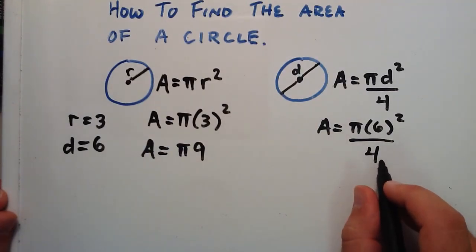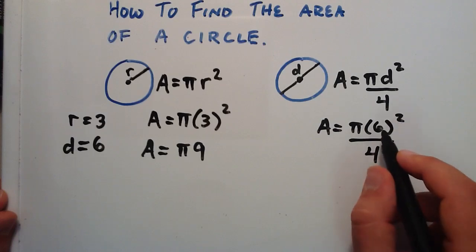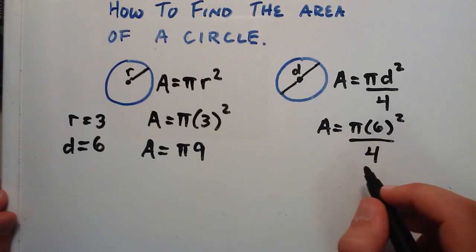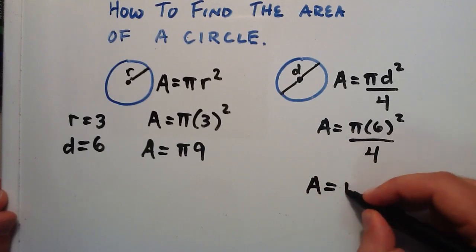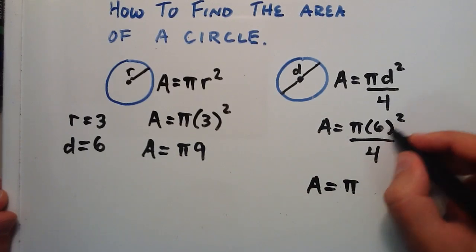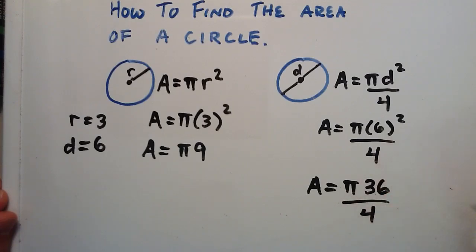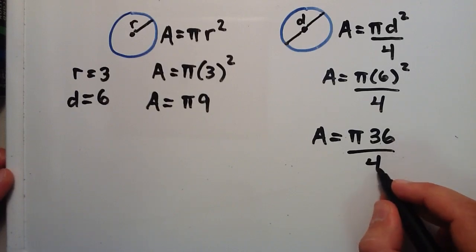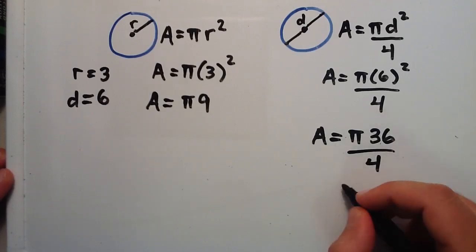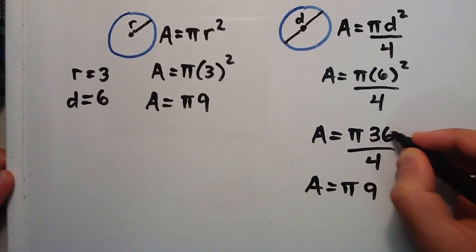Using the diameter method, we do the exponent first as well. So 6 squared is the same thing as 6 times 6, and 6 times 6 is 36. So we get the area is equal to pi times 36 divided by 4. And 36 divided by 4 is equal to 9, so we simply have the area is equal to pi times 9.